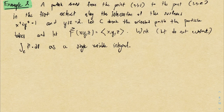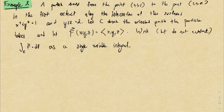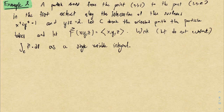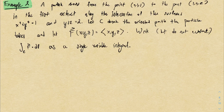For example two, a particle moves from the point (0,1,1) to the point (2,0,2) in the first octant along the intersection of two surfaces: x² + y² = 1 and y + z = 2. We let C denote the path. The vector field is F(x,y,z). The problem asks us to write — but not evaluate — the vector line integral of F along C as a single-variable integral. There's a lot going on, so let's break it down piece by piece and draw some pictures.